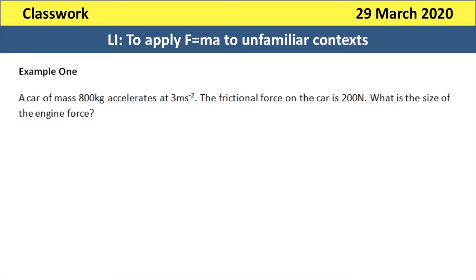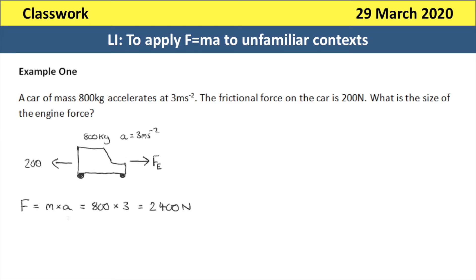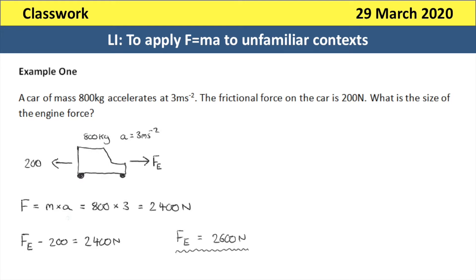It is possible for us to work out the resultant force on the car that produces this acceleration of 3 metres per second squared by using F equals M times A. So we do 800 multiplied by 3, which gives 2,400 newtons. That 2,400 newtons is not the size of the engine force. As you can see from the diagram, the engine force acts forwards but there is that 200 newton frictional force acting in the opposite direction. The resultant of those two forces has to be 2,400 newtons, so the engine force is 2,400 plus 200, which gives us 2,600 newtons.